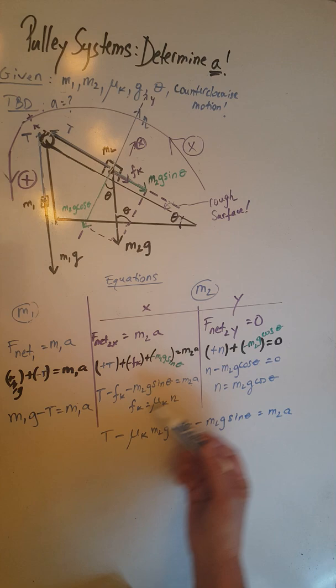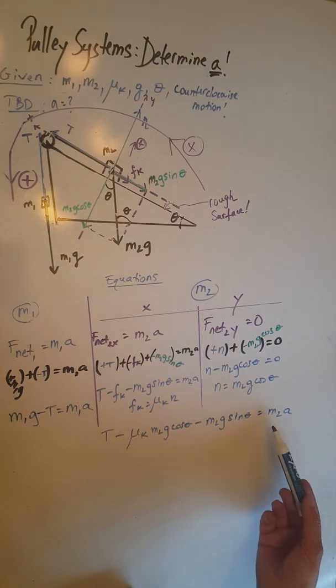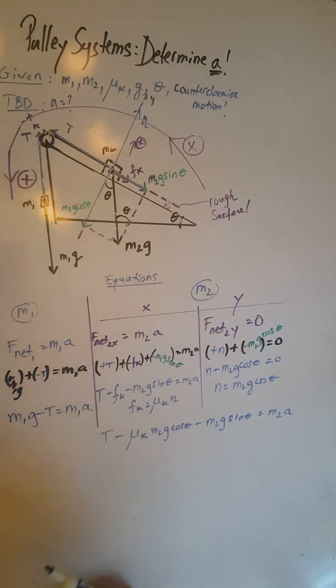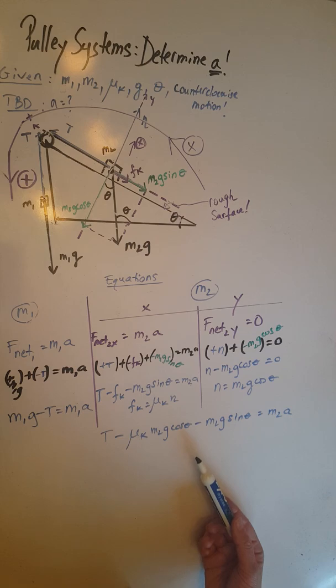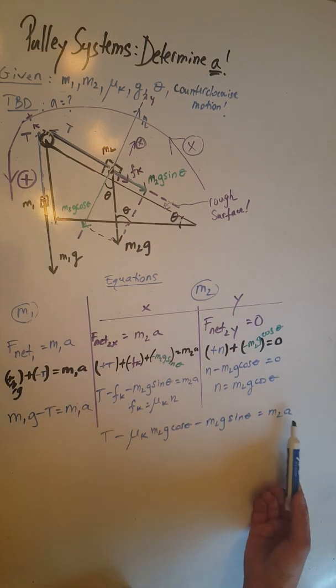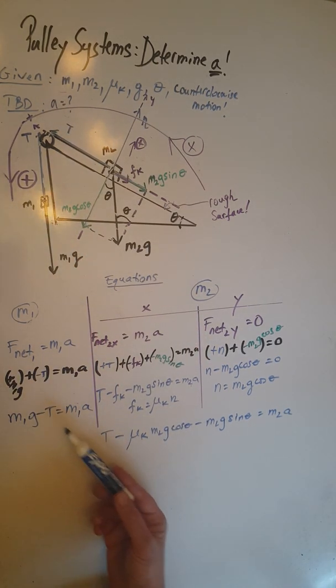So now we have one equation for object m2 after we combine the x and y equations into this one, and we have another equation for m1. In these two equations, the only two unknowns are T and a. However, we only need to calculate a, so therefore we would like to eliminate T.